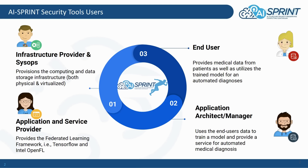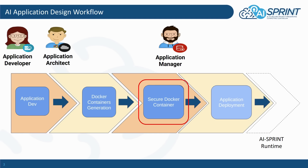But of course, all these four personas would benefit from enhanced security that is provided by security tools of the AI Sprint toolchain. So where do the security tools actually come in to the pipeline of the AI Sprint design workflow?